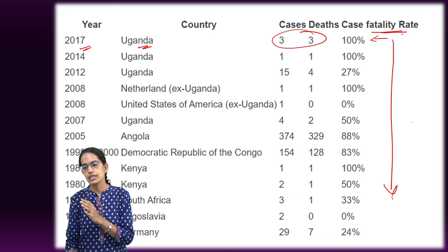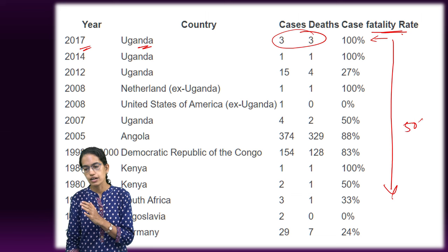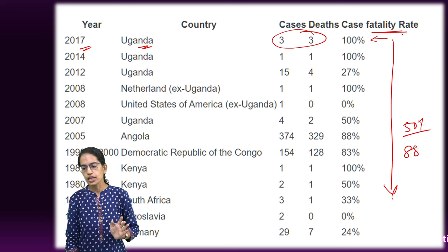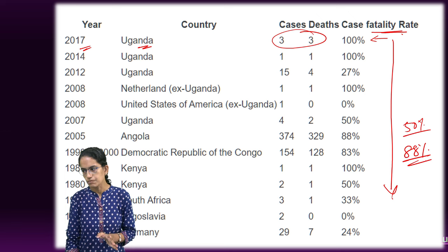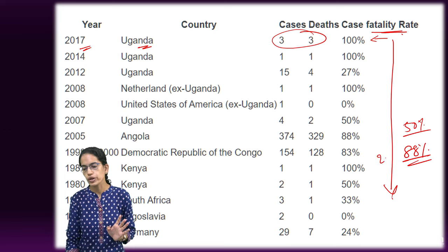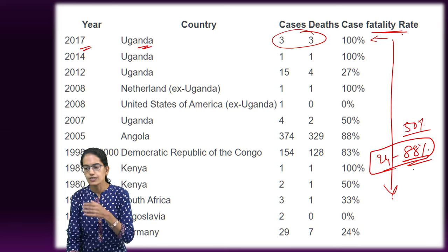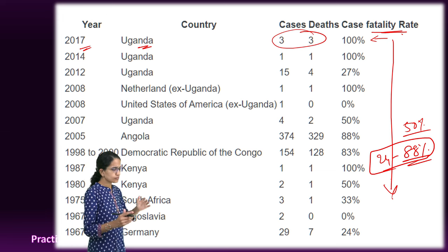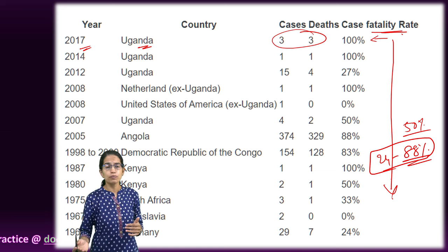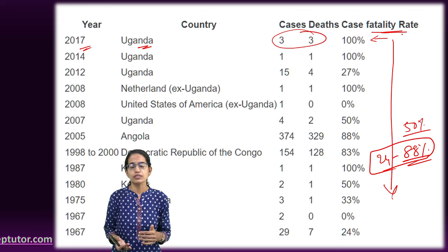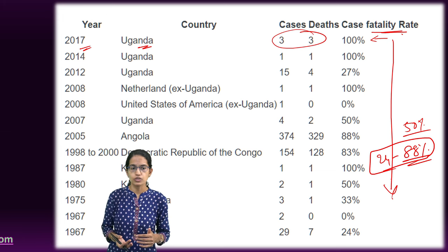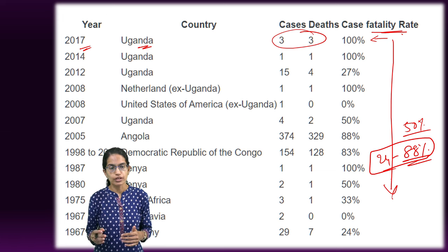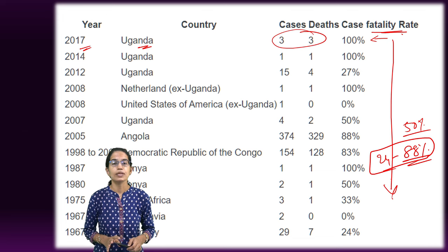The average fatality is considered around 50%, though in most cases it is considered around 88%. The probable range is 24 to 88%, and case management is very challenging. Person-to-person and human-to-human transmission must be controlled — these are some of the important ways the Marburg virus can be checked.